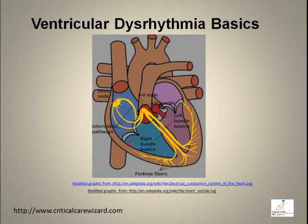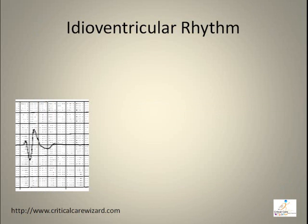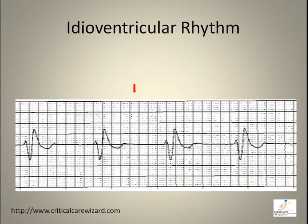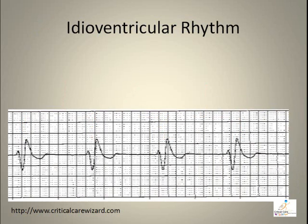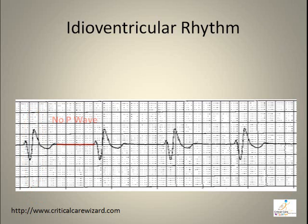The ventricular intrinsic rate is between 20 to 40 per minute. Idioventricular rhythm features a predictable pattern, a rate between 20 to 40 beats per minute, a missing P wave, and a QRS duration of more than 0.10 seconds.